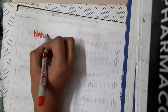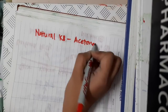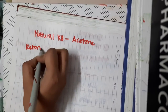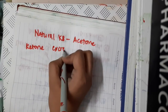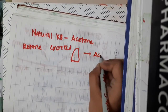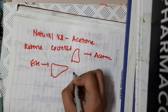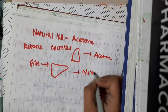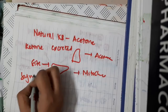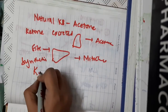Now let us learn some one-liners. The natural ketone body is acetone. The ketone body excreted through the lungs is also acetone. The synthesis of ketone bodies occurs in the liver mitochondria.